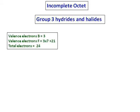Group 3 element boron has 3 electrons. When it combines with fluorine, it gets another 21 electrons, giving a total electrons of 24.